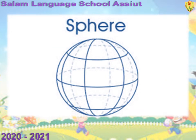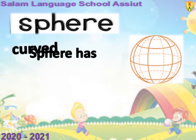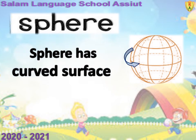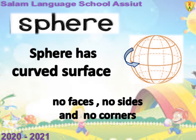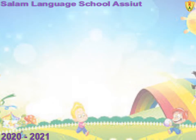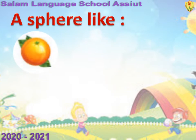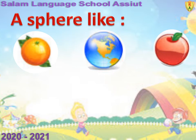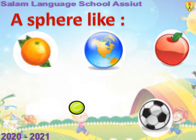Sphere. What's meaning of sphere? شكل كروي. Sphere has curved surface — يعني إيه curved surface؟ يعني ليها سطح مدور مقوس على شكل منحنى, ملهاش اي اضلاع خالص, زي شكل الكورة. It has no faces, no sides, and no corners. Sphere is like an orange, globe, apple, tennis ball, and football.